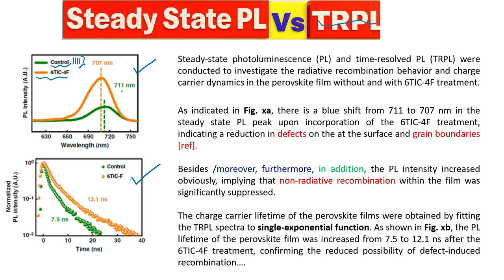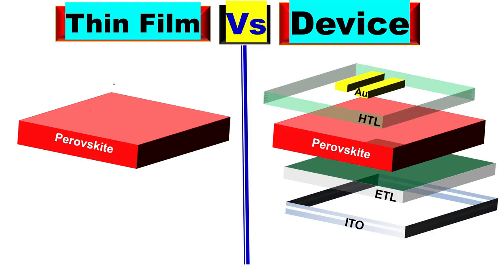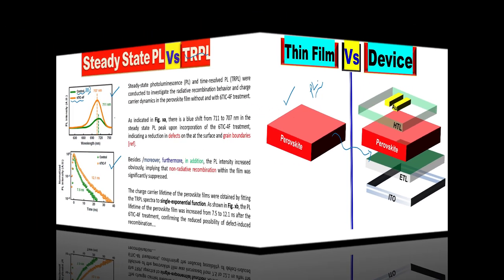I want to clarify that these PL spectra are basically for thin film — the thin film of perovskite. The PL spectra look a certain way when we take them for thin film, but when we insert this film into the device, the PL spectra basically changes.